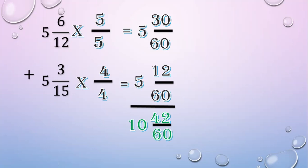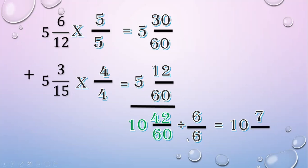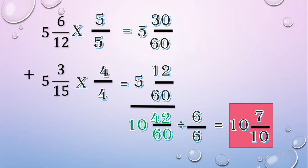Then express the answer in lowest terms. Divide both the numerator and the denominator by 6. Copy the whole number, divide the numerator: 42 divided by 6 equals 7. Divide the denominator: 60 divided by 6 equals 10. The final answer is 10 and 7 over 10.